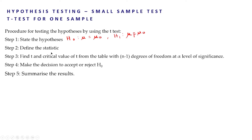The second step is we have to define the test statistic t. It is given by t = (x̄ − μ₀) / (s / √(n−1)), where x̄ is the sample mean, μ₀ is the population mean, s is the sample standard deviation, and n is the sample size. Using all these values we can find the value for the test statistic t.